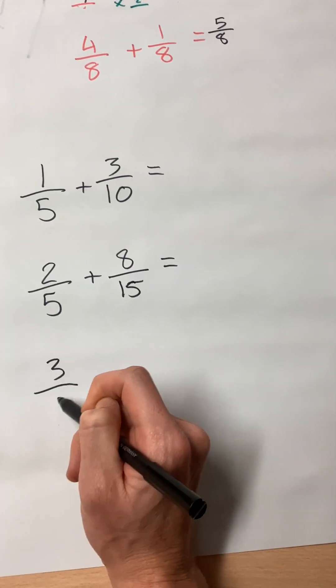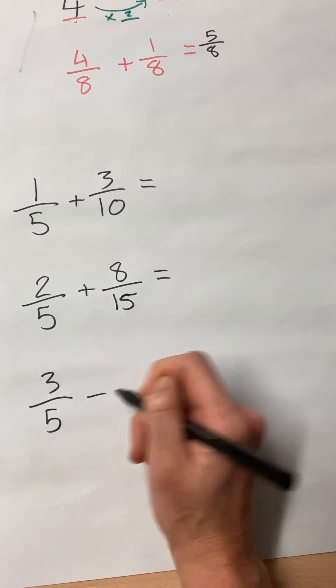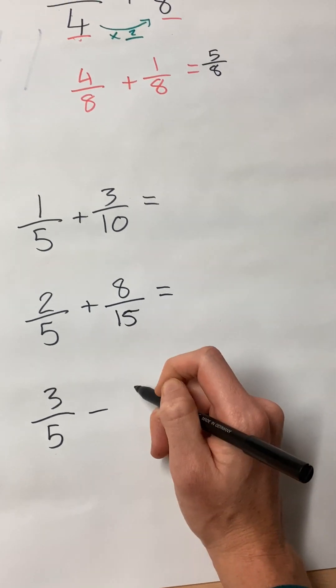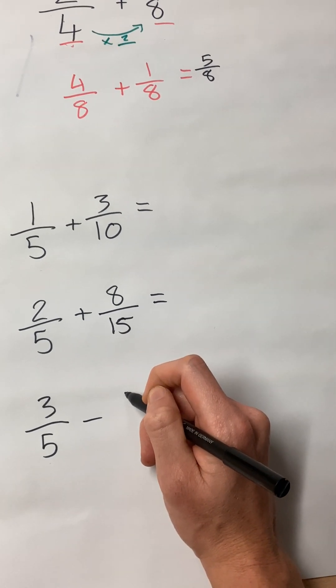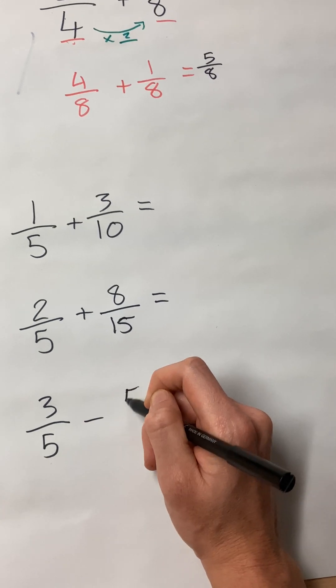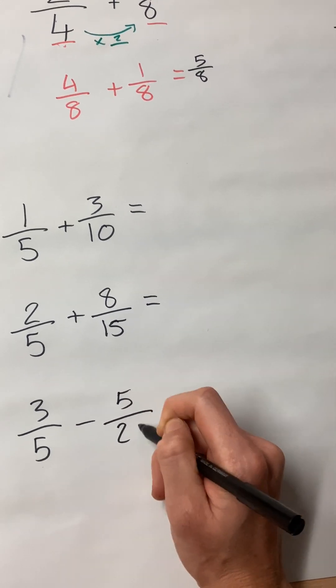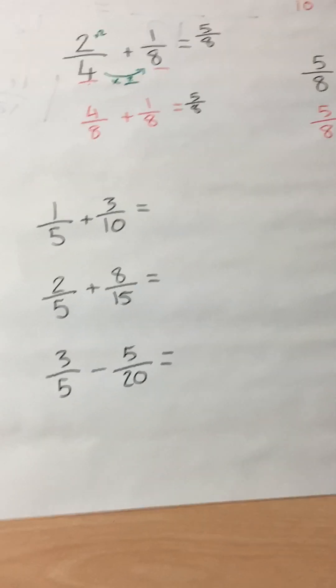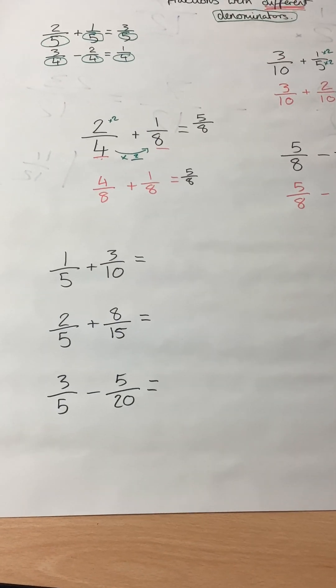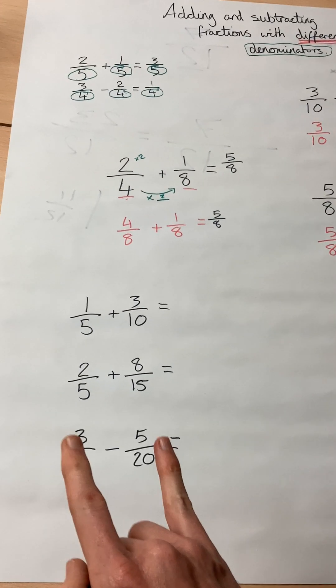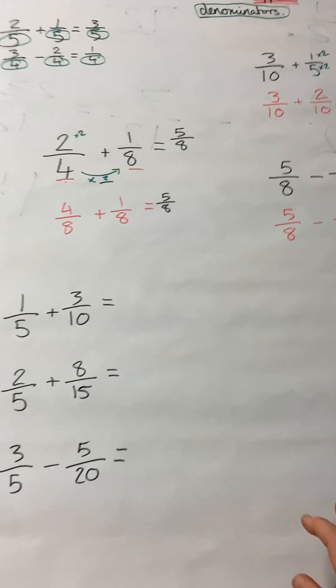Three-fifths minus five-twentieths equals. Now, all of those are your five-times table. You can change the same to convert those.